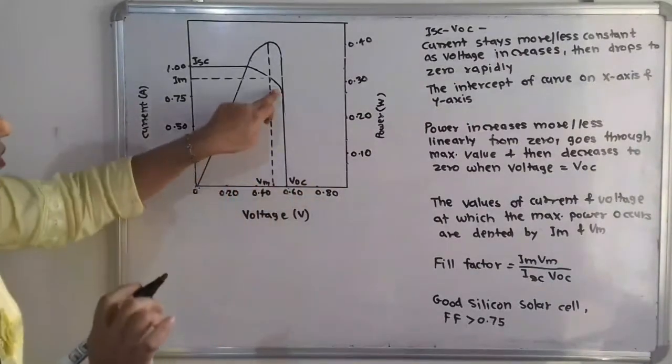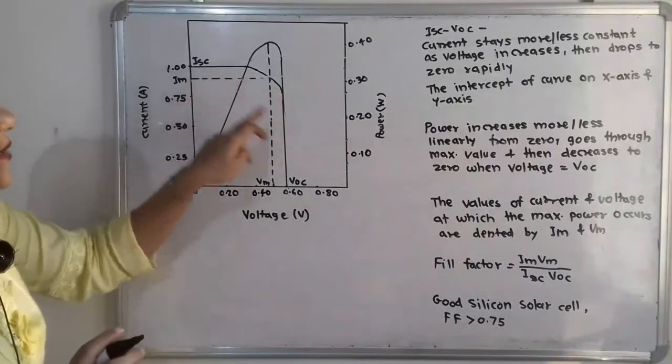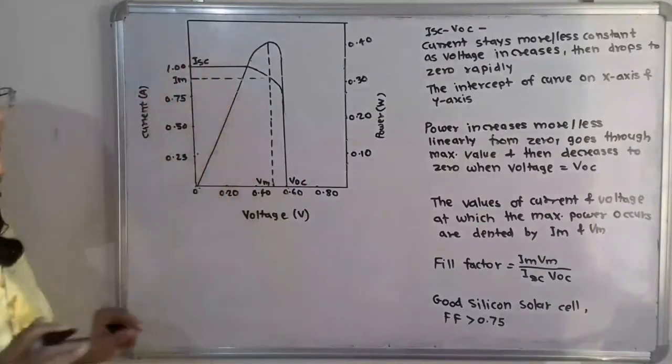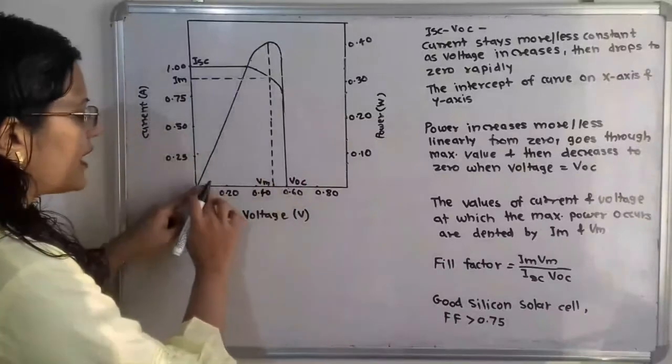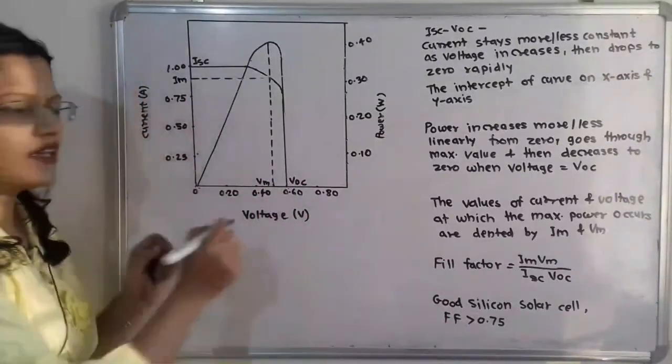The intercept of this curve on the x-axis and y-axis. So when we plot the intercept on the x-axis, so here on the x-axis voltage V is there, and at the point of intercept we will say here open circuit voltage.